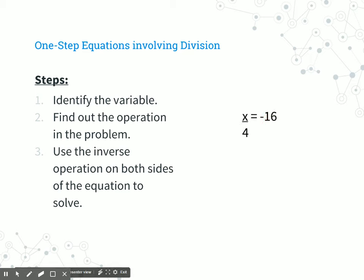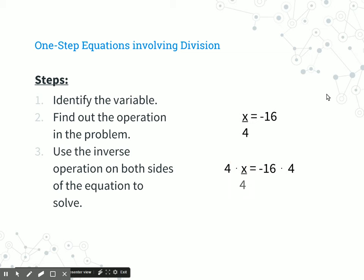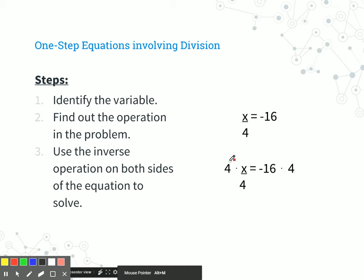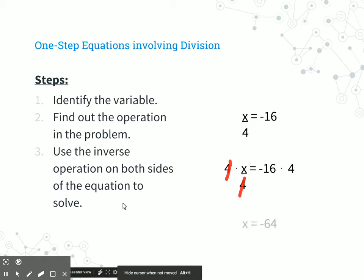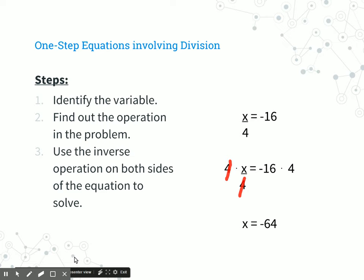Last one. The variable is on the left side and the operation this time is division. So the inverse operation would be to multiply on both sides — multiply by whatever is on the same side as the variable. The 4 is on the same side as the variable, so multiply by 4 on both sides, because whatever you do to one side, you have to do to the other. The 4s cancel out, and we're left with x equals negative 64. Negative 64 divided by 4 would be negative 16.